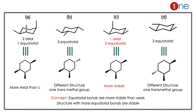Here we have 4 structures, and we draw the equatorial and normal planar form — A, B, C, D. B and D are in the anti-position, so they are definitely not our answer. We have only between A and C. More equatorial bonds are stable. A has 2 axial and 1 equatorial bond, but C has 1 axial and 2 equatorial bonds. So C is the most stable structure. The concept to learn: equatorial bonds are more stable than axial bonds.